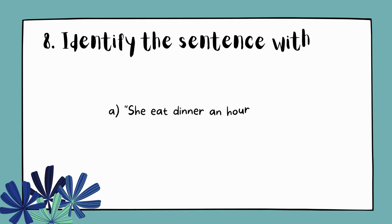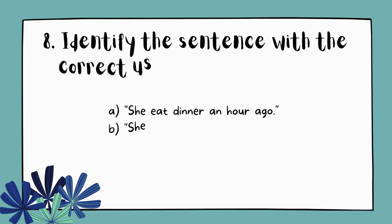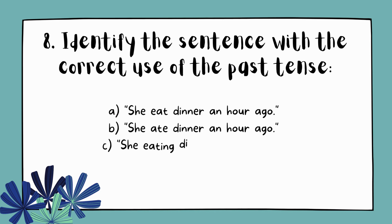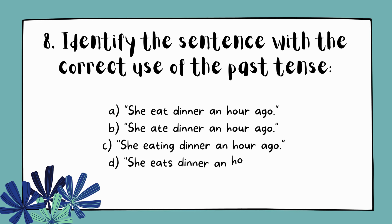Question 8. Identify the sentence with the correct use of the past tense. A. She eat dinner an hour ago. B. She ate dinner an hour ago. C. She eating dinner an hour ago. D. She eats dinner an hour ago.